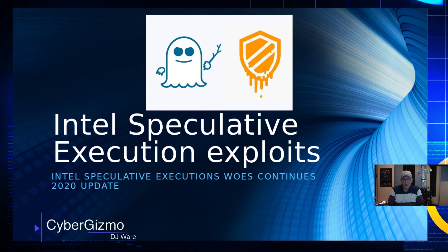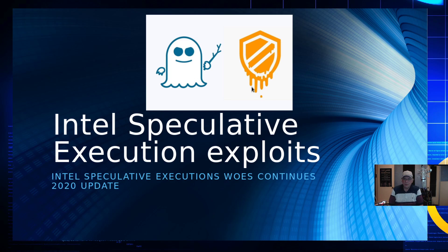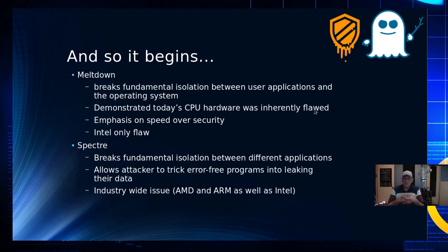So here we go again. I've heard the predictions, I've heard the industry pundits in security say the only way this is going to stop is if we just start over, get a new processor, redesign it from the ground up. But yeah, we're back into it again. There's been new exploits discovered, and we're going to talk about all of them to put things in perspective of just how bad this has been. This all started with Spectre and Meltdown back in 2018.